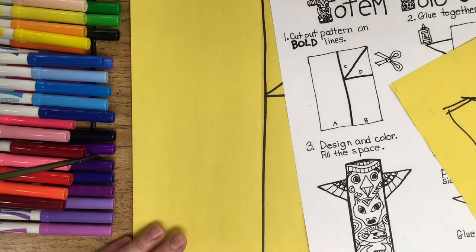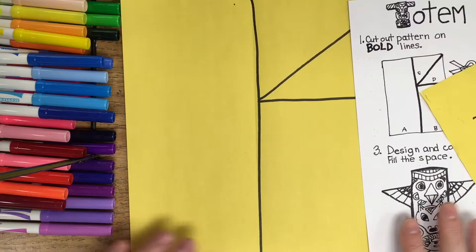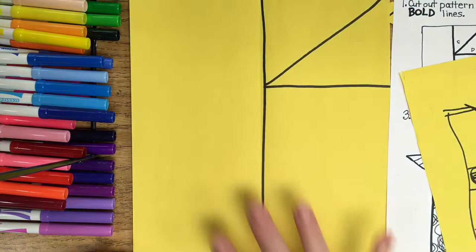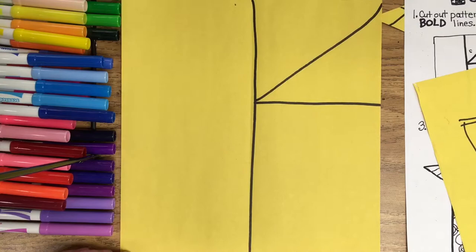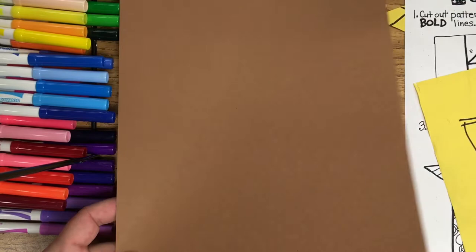The first step for this project is we're going to be using some construction paper. And we're going to want to make the totem. Or you can use copy paper too, but I like the construction paper because it gives a nice color to the background. We want to draw in some of these guidelines. And I'm going to draw it with my...I'm going to start with the brown piece today.